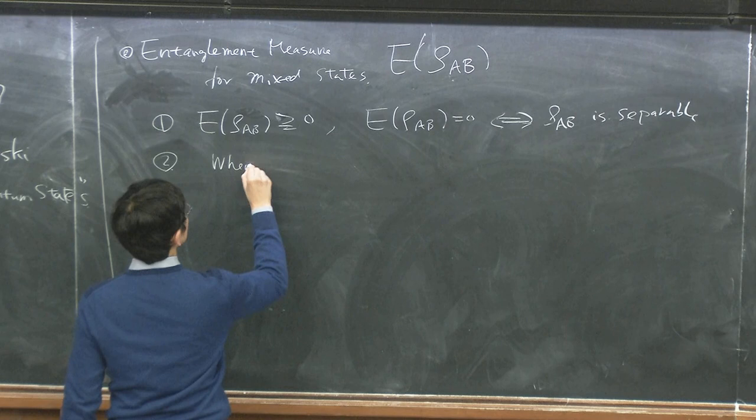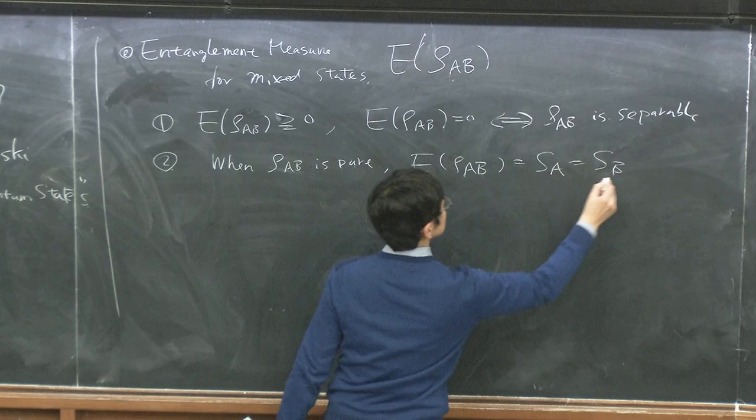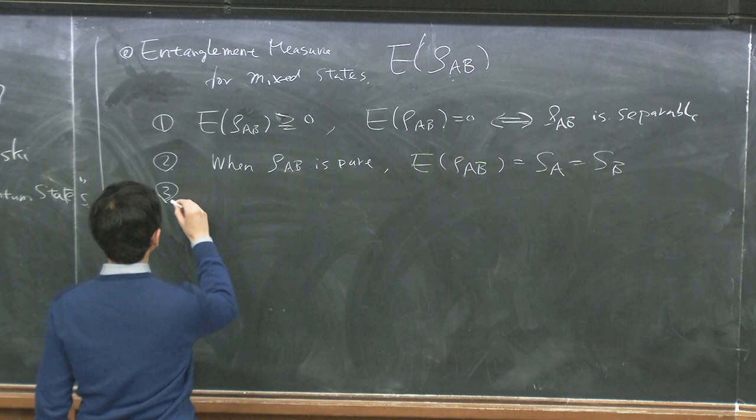The second condition: when ρ_AB is a pure state, we should recover von Neumann entropy S_v — the standard entanglement entropy.